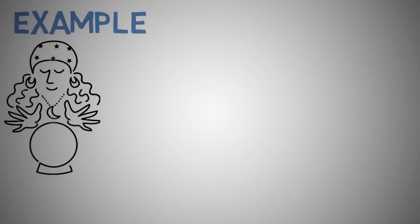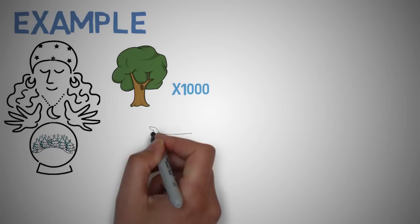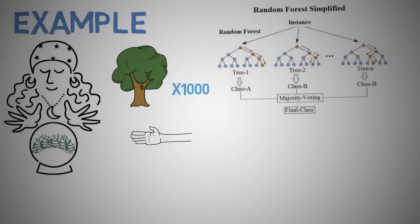So to perform the predictions using the trained random forest algorithm, we need to pass the test features through the rules of each randomly created tree. Suppose let's say we formed a thousand random decision trees to form the random forest. Say we're detecting if an image contains a hand. Each random forest will predict a different outcome or class for the same test feature. A small subset of the forest will look at a random set of features.